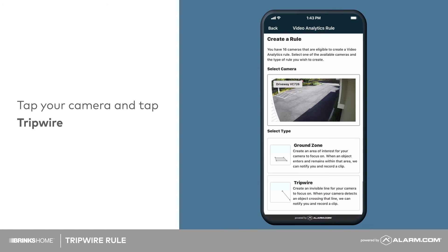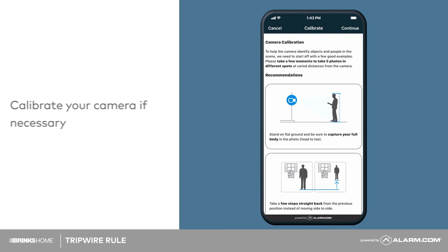Tap the camera you would like to use and tap Tripwire. If you have not created a video analytics rule on the camera previously, you must first calibrate the camera. Follow the on-screen steps on the mobile app or check out the Smart Tip video focused on video analytics calibration.